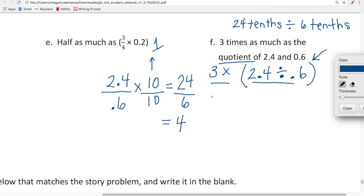We can continue evaluating our expressions. So 2.4 divided by 0.6 is four. And now we need to find three times four. Three times four? Twelve. Wow. Okay, cool.